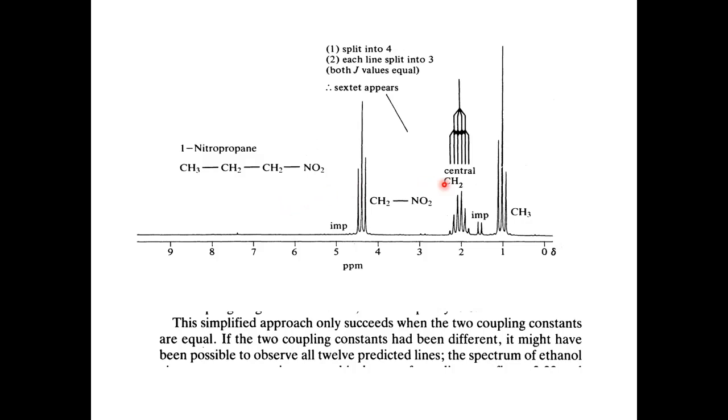So this is a typical example of 1-nitropropane. Now you see in this spectra three types of protons. They have different chemical shifts but sometimes they have the same J value. So that will appear as a sextet. Now which proton is appearing as a sextet? If they don't have same J value, then how many signals you will expect from this compound?